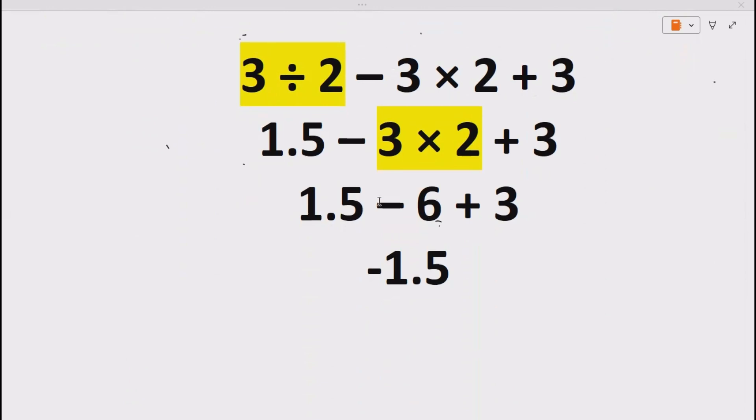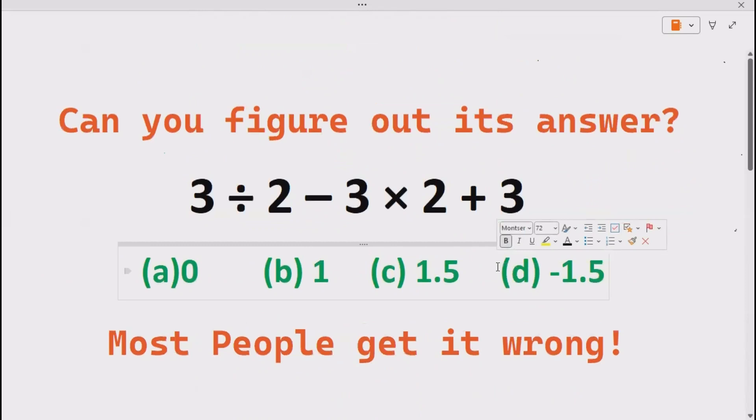Now we can see that -6 plus 3 gives us -3, and 1.5 minus 3 is -1.5. This means our correct answer is option D, -1.5.